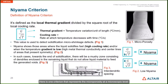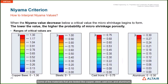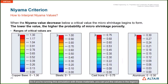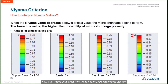There is a criterion that represents microporosity at a microscopic level — the ratio of thermal gradient and cooling rate, known as the Nyama criterion. Materials like copper, steel, cast iron, and aluminum have threshold values for microporosity. For aluminum, it should be 0 to 0.3. When running this simulation, you can put these values in the legend, and by moving the slider from top to bottom, you can visually see which locations have microporosity present.